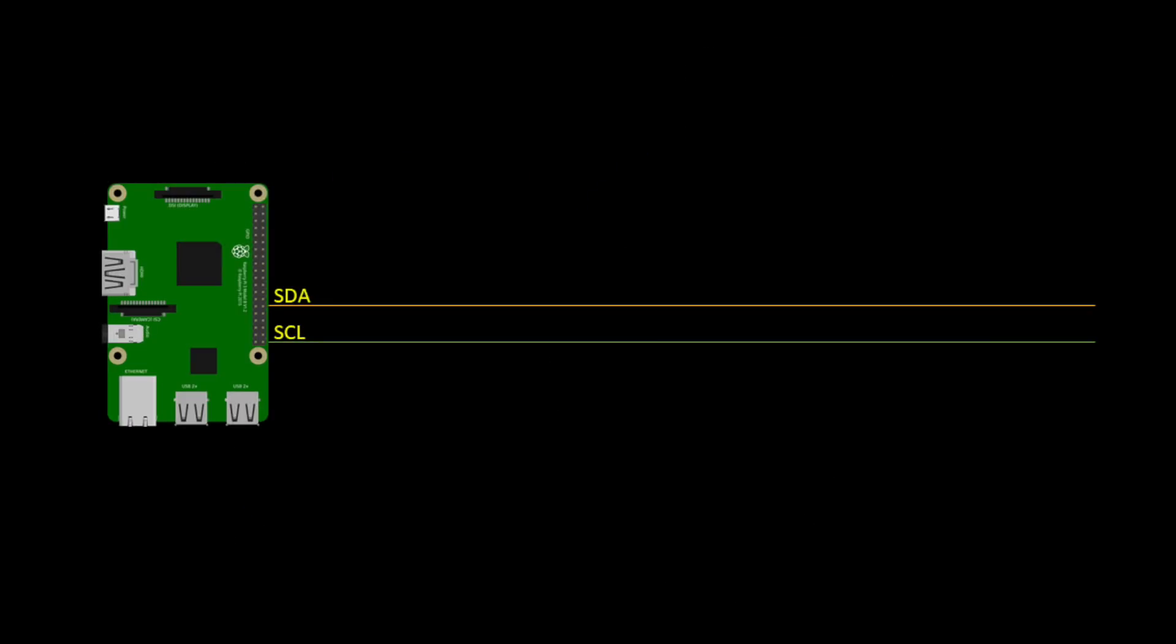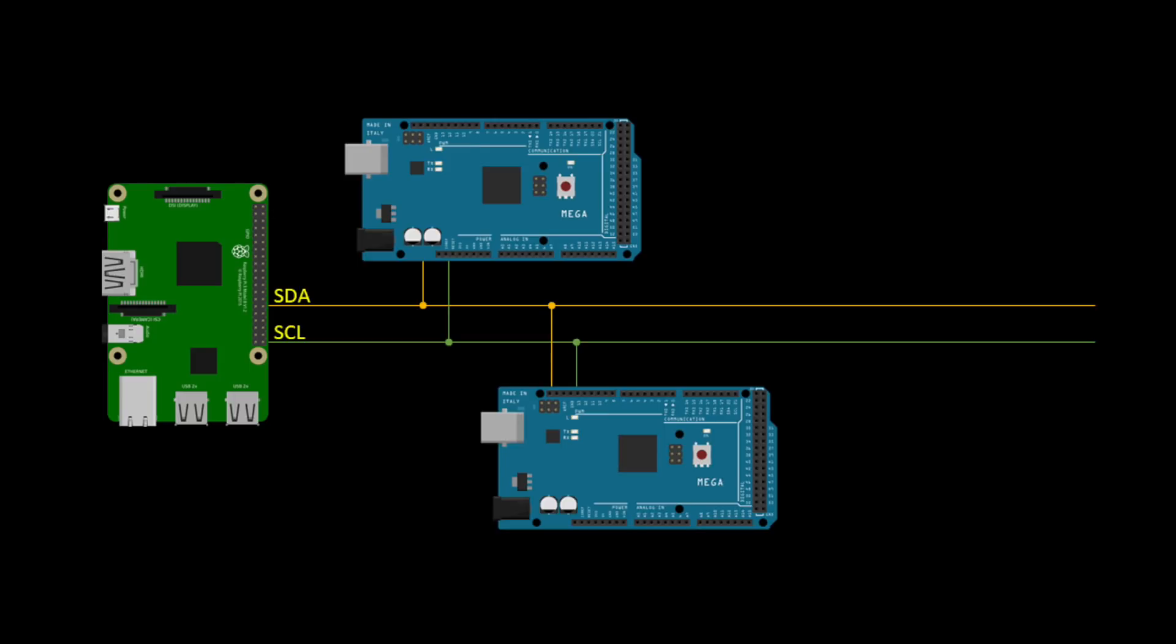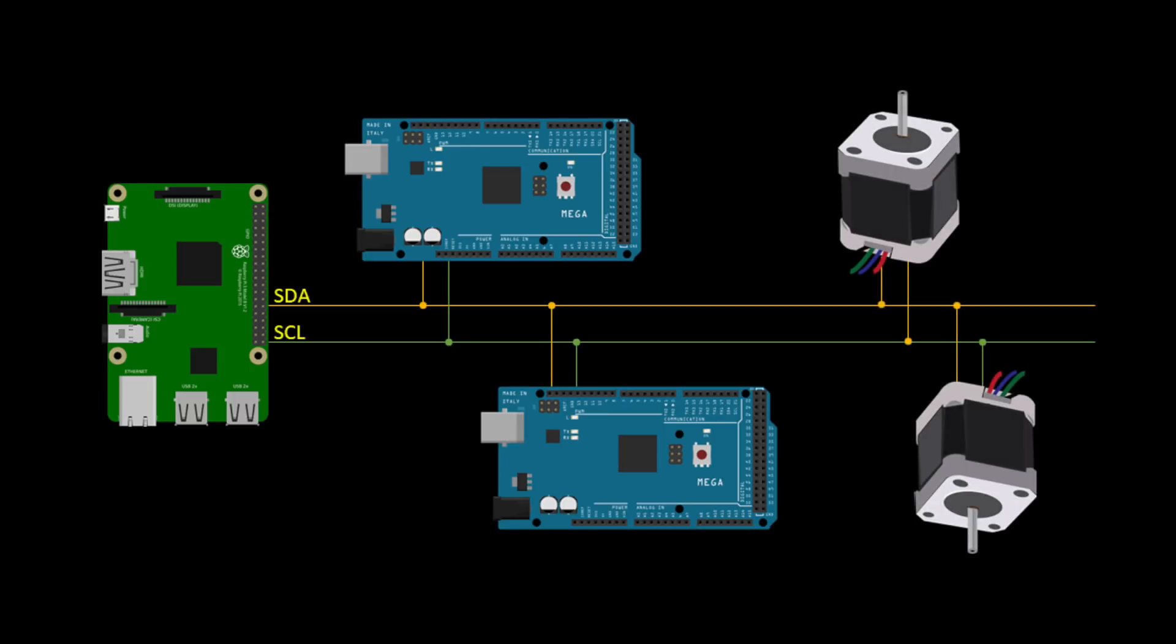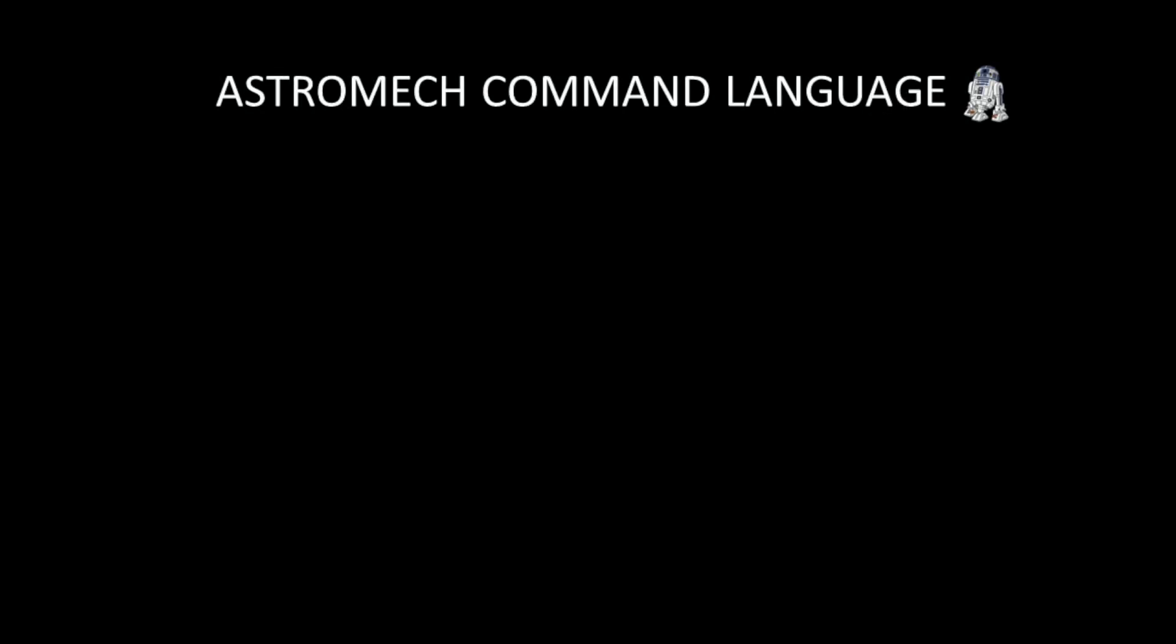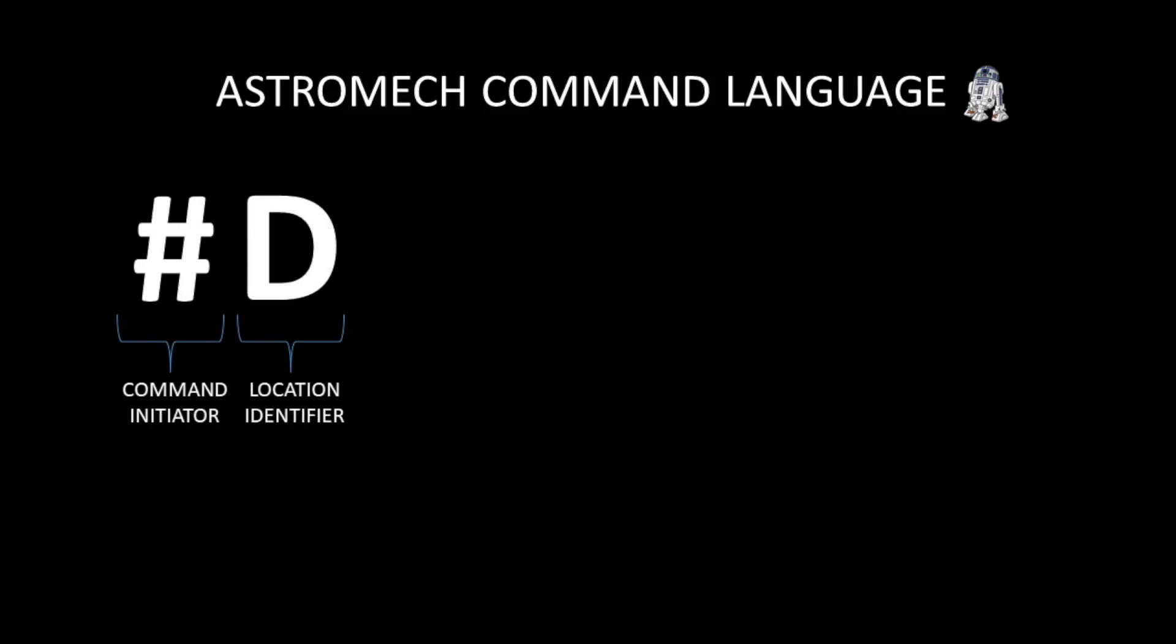Now the next thing I needed to figure out was how to make all of these devices talk to each other in a consistent manner. What I came up with is a simple astromech command language or ACL. It works like this. Every command starts with a pound or hashtag for you young people. Following that is a single letter that designates something specific.